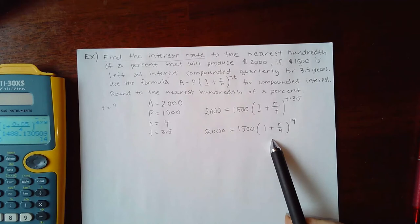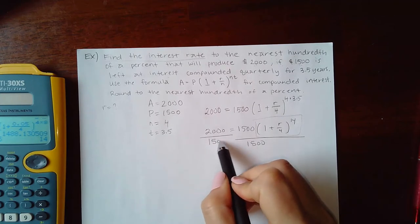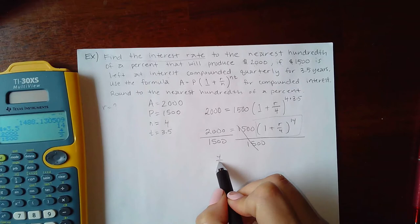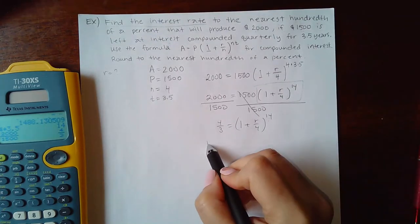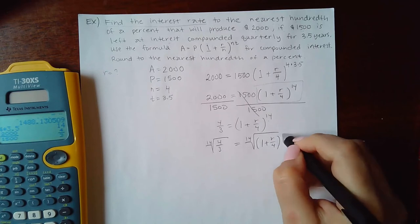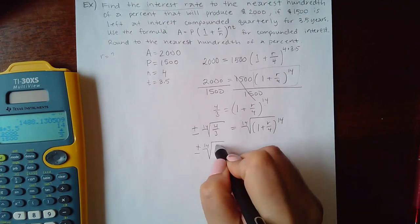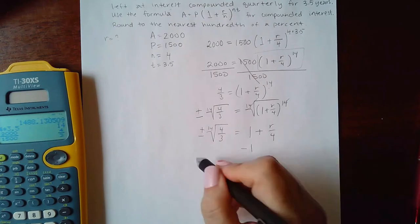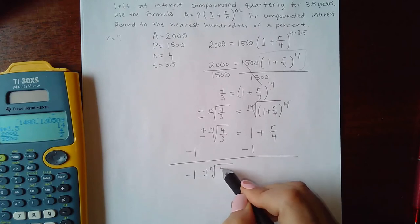To isolate r, first I need to isolate the exponential part by dividing both sides by 1500, which reduces to 4/3. Then to undo the 14th power, I take the 14th root of both sides — since it's an even root, I get plus or minus. This undoes the exponent, leaving 1 plus r over 4. Then I subtract 1, putting the plus or minus on the front.